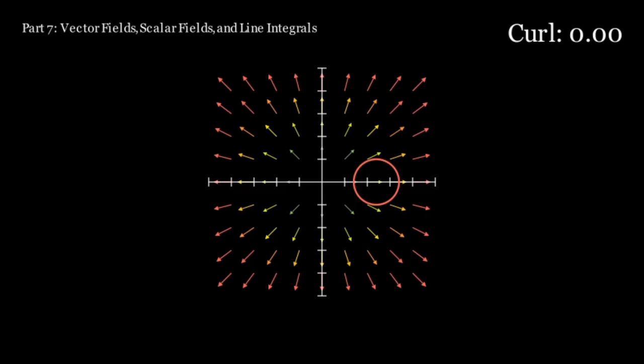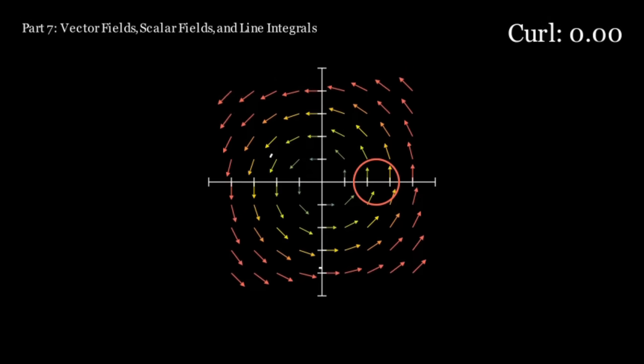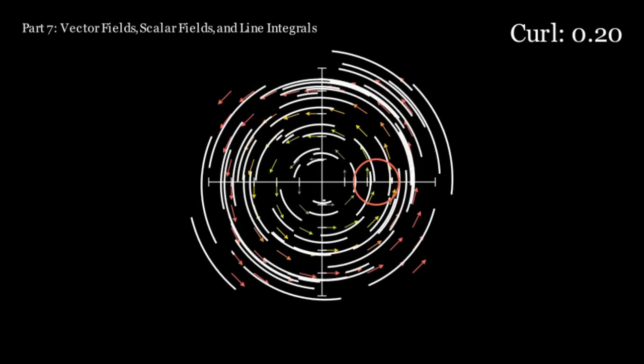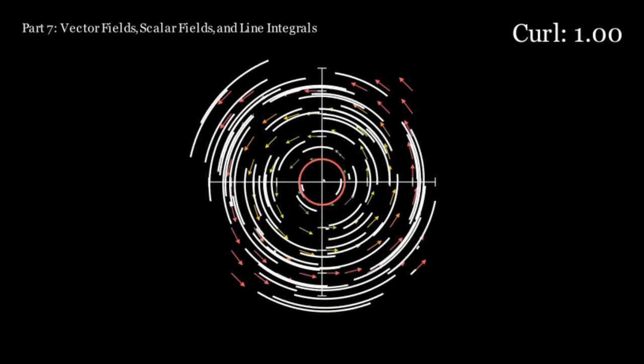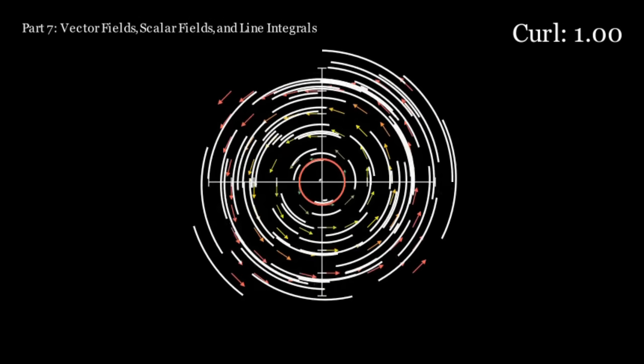Curl is the amount of rotation around a certain point in a vector field. Here on the outside, the curl is low since there is not much spin. But at the center, the curl is high since everything spins around it.